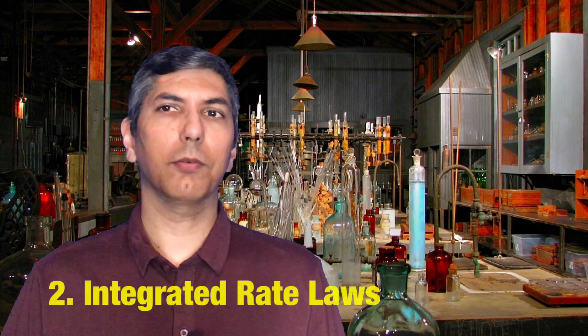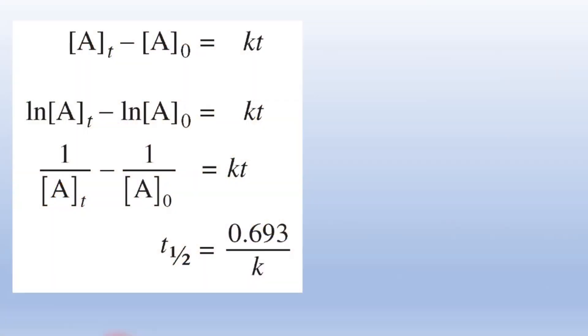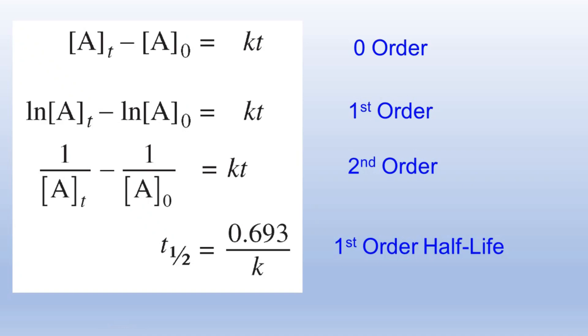Number two: integrated rate laws. For kinetics, you have to know how to write a rate law and calculate a rate constant, but most of that is simple algebra. The part you have to memorize is knowing which integrated rate law is which. The equation sheet gives you all the integrated rate laws you'd ever need, but it doesn't tell you which one is first order, second order, or zero order. The natural log of concentration is code for first order. One over concentration is code for second order. And concentration alone is code for zero order. If you know how to tell those three apart, that will get you pretty far on the kinetics questions.